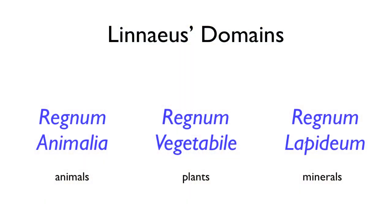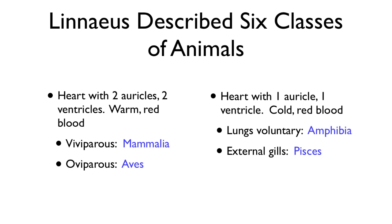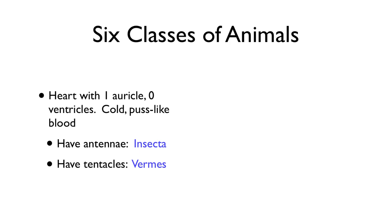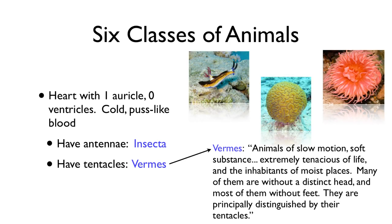Linnaeus came up with a three-domain system, classifying everything as either alive — animals or plants — or not alive, in the kingdom of minerals. He had six classes of animals, many of which are still in use today. Where it fell apart was his classification of insects and vermis — a term no longer in use — which he used to describe soft-bodied creatures with tentacles. Nudibranchs, corals, and sea anemones would be examples of what Linnaeus called vermis, and of course we do not classify those together today.